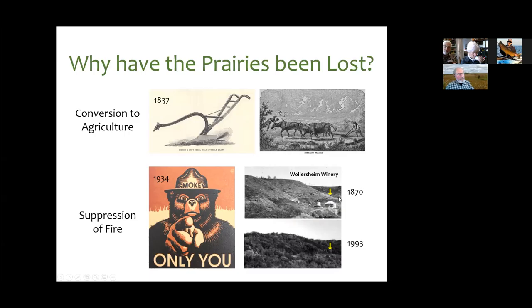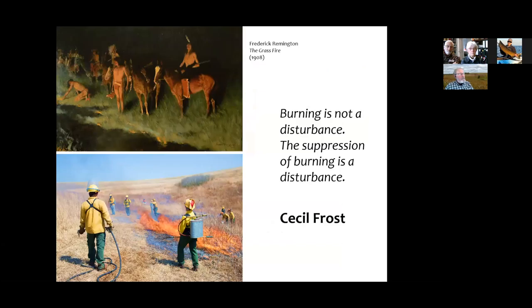The effect of fire suppression is visible to anyone who's lived around here. The Wollersheim Winery outside Prairie du Sac, Wisconsin — in 1870 the bluff behind it was basically an open prairie, but by 1993 it had completely treed in and you can barely see the winery buildings anymore. The suppression of fire is largely responsible for the loss of about 99 percent of the prairie and savanna that we once had in Wisconsin.